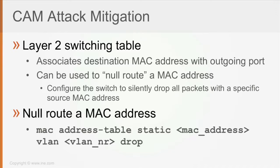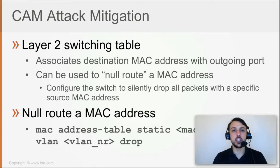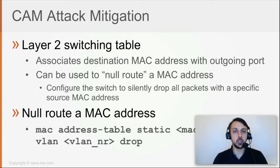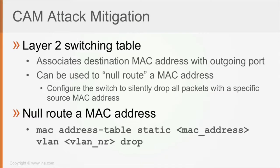What this means is that when the switch receives a frame where the destination MAC address matches the configured MAC address from this command, and the frame is received from the specified VLAN number, then the switch is going to silently drop that frame without letting anyone know. This is less common because it requires a lot of manual configuration, it requires you to know who the attacker is, and it's not scalable.